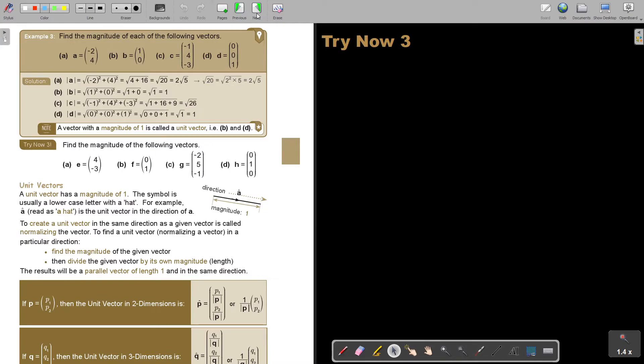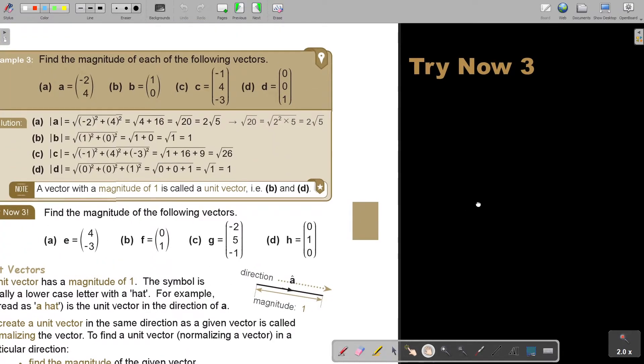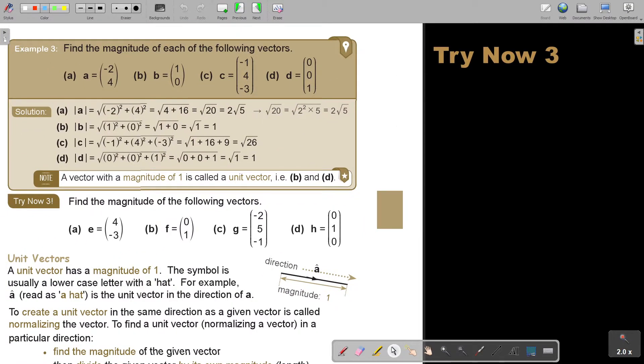Let's look at an example. I'm just going to make it bigger so that you see better. Find the magnitude of each of the following vectors. Very easy. It's just coming from Pythagoras theorem. So I square the x, I square the y, I take the square root, and I got my answer. And I can write it in surd form. This is the simplest.